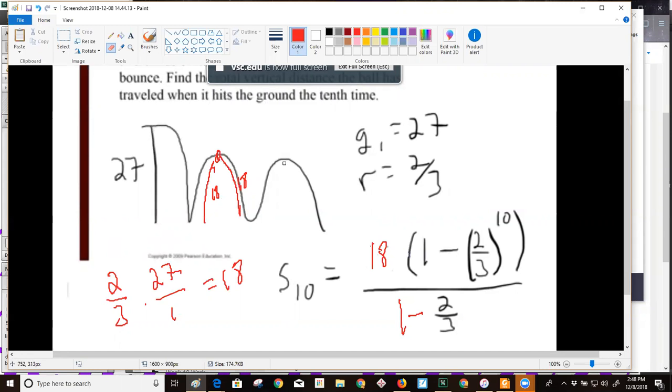For each of these next terms we've got to double them, but we don't double the 27 to start with. So to solve this problem and find how far the ball actually traveled, I'm going to start my first term being 18. That's going to let me find the sum of the first 10 bounces.